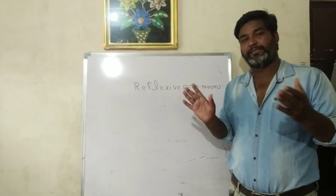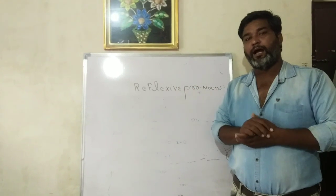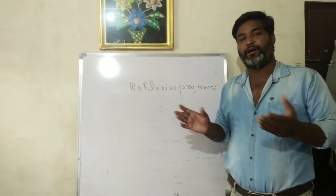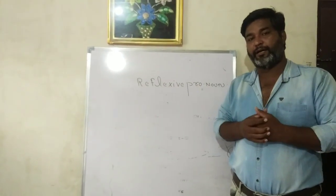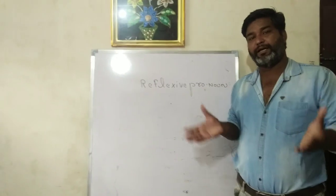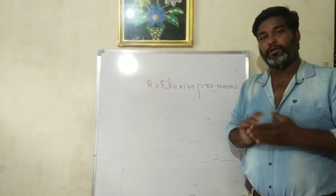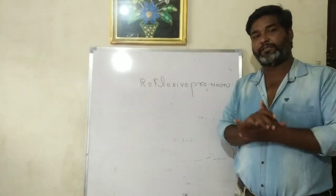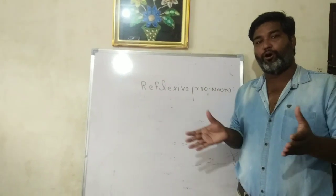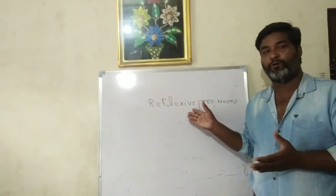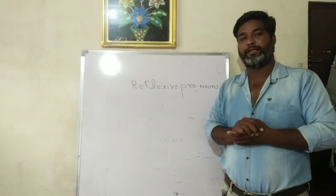For example, 'I' ka reflexive pronoun hota 'myself.' For example: 'I did this work myself.' Here 'myself' refers back to the subject of the sentence, which is 'I,' and both the reflexive pronoun and the subject of the sentence are the same.